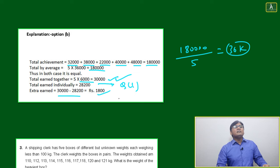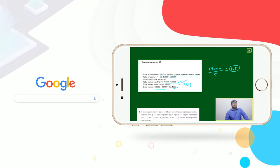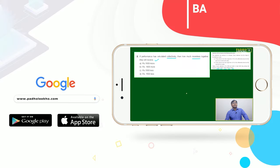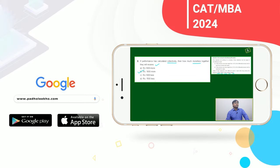1,800 will be the difference: 30,000 - 28,200 = 1,800. This question asks if performance difference is calculated collectively, then how much more or less.